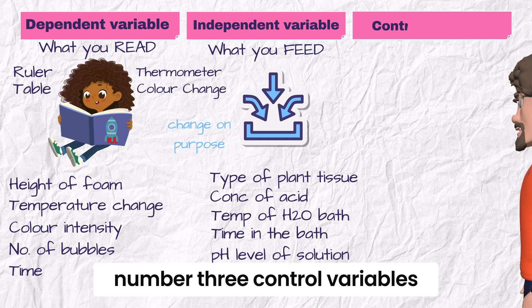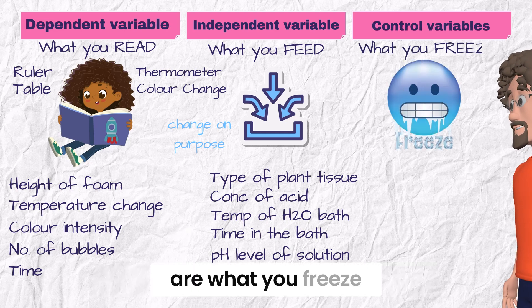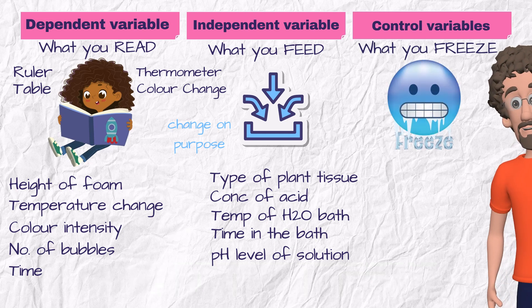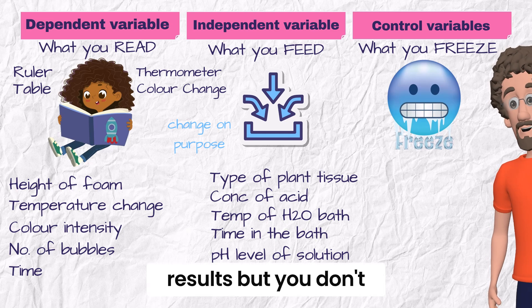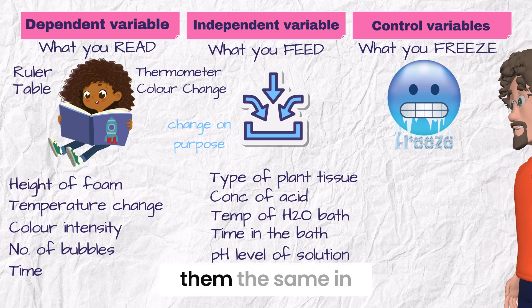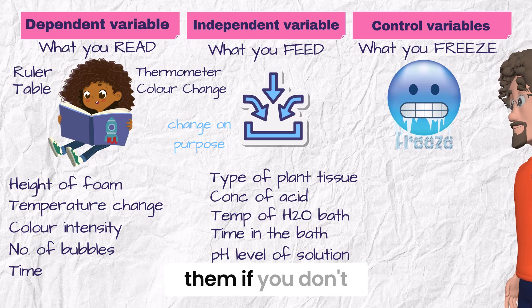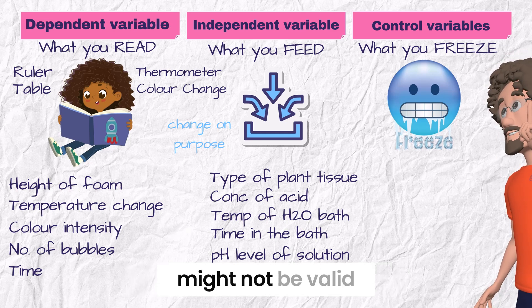Number three: control variables are what you freeze. These are everything else that could affect the results, but you don't let them. You keep them the same in all setups. You don't touch them. You freeze them. If you don't control these, your results might not be valid.